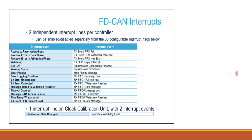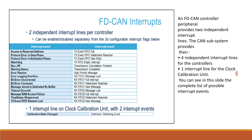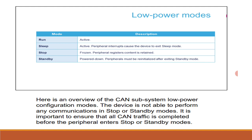Now let's move on to the low power modes of the CAN. Here is an overview of CAN subsystem low power mode configurations. The device is not able to perform any communications in stop or standby mode. It is important to ensure that all CAN traffic is completed before the peripheral enters stop or standby mode.